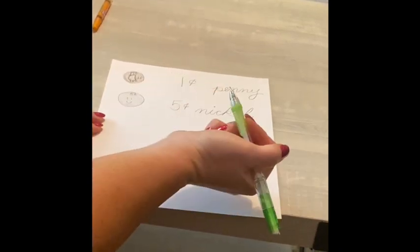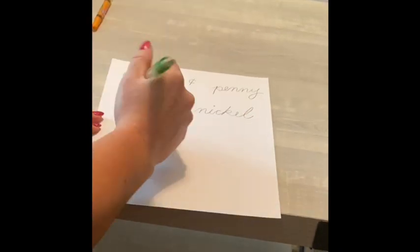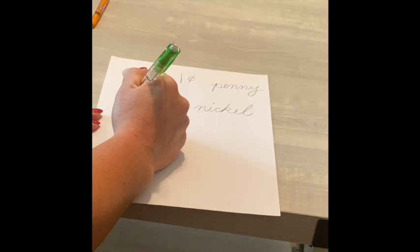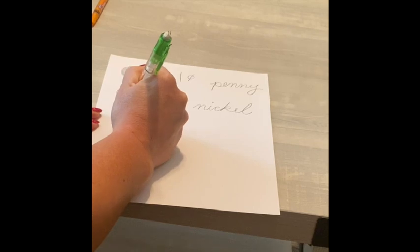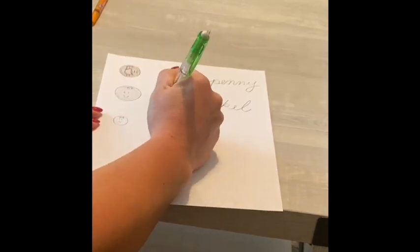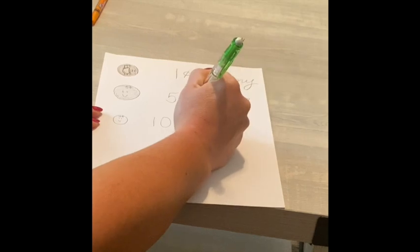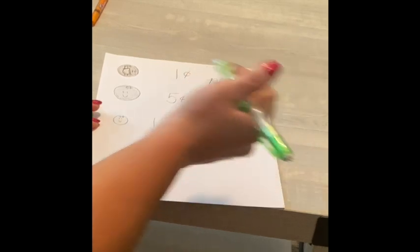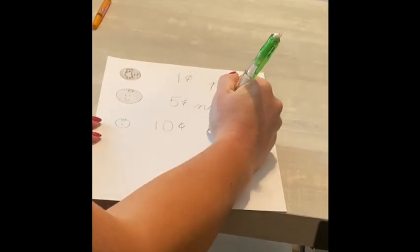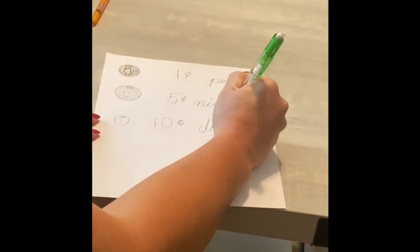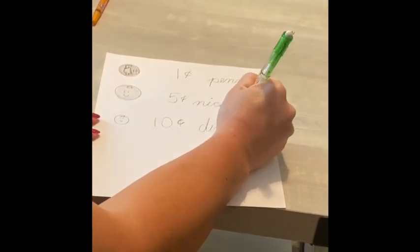Okay. Our next coin is a dime. A dime is the smallest coin. So, I'm just going to do a little circle here. Dime is worth 10 cents. Dime is worth 10 cents. And a d-d-d-d-dime. What letter do you think a d-d-d-dime starts with? D. D-I-M-E. Dime.